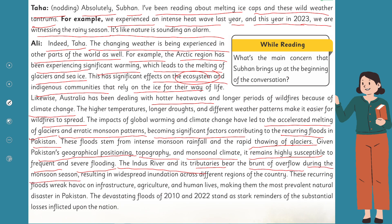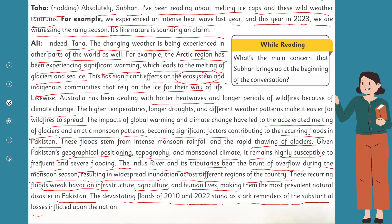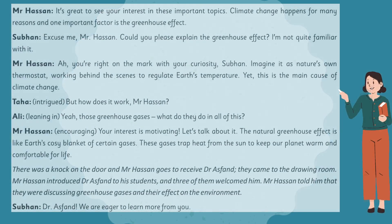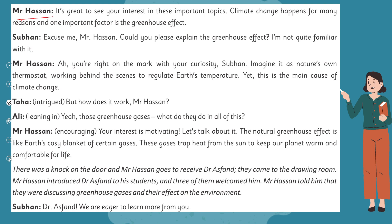Ali adds: 'The Indus River and its tributaries bear the brunt of overflow during the monsoon season, resulting in widespread inundation across different regions of the country. These recurring floods wreak havoc on infrastructure, agriculture, and human lives, making them the most prevalent natural disaster in Pakistan. The devastating floods of 2010 and 2022 stand as stark reminders of the substantial losses inflicted upon the nation.' Climate change happens for many reasons, and one important factor is the greenhouse effect.